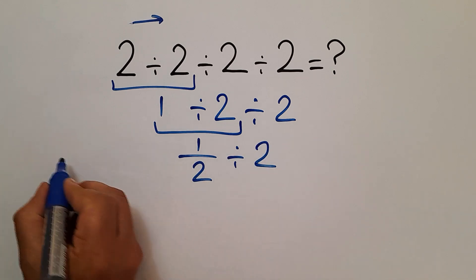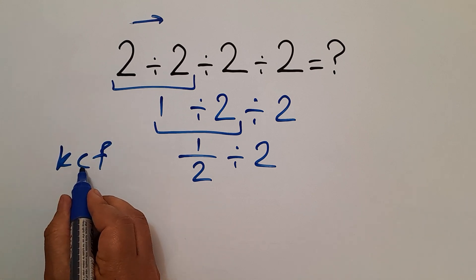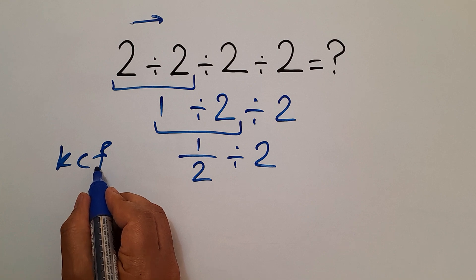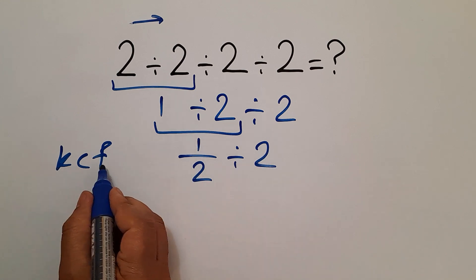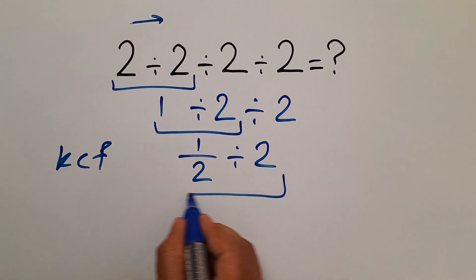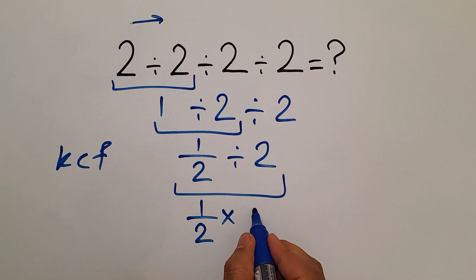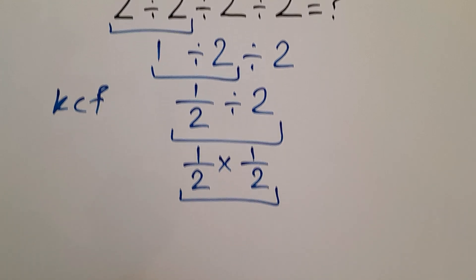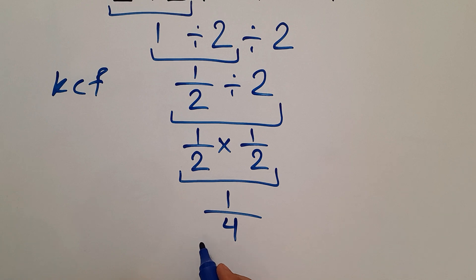Here, according to the KCF rule — K stands for keep, C stands for change, and F stands for flip — 1 over 2 divided by 2 can be written as 1 over 2 times 1 over 2. And this is equal to 1 over 2 times 2 equals 4. So, our final answer to this problem is 1 divided by 4.